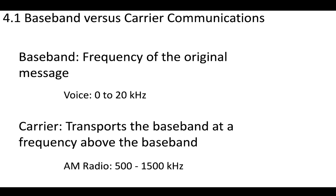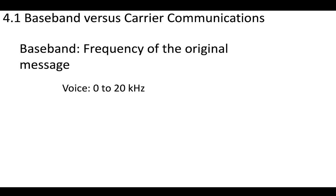Now, if you modulate a signal, you would select a carrier frequency that transports the baseband at a frequency above the baseband. For example, you've probably all listened to radio, and AM radio contains frequencies from 500 to 1500 kilohertz. So clearly the frequencies of the AM radio are much higher than the voice — we are transporting the voice signal in the baseband using a carrier frequency that's much higher than the baseband.